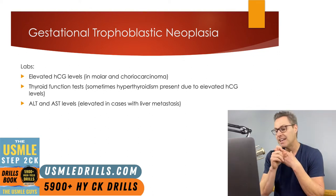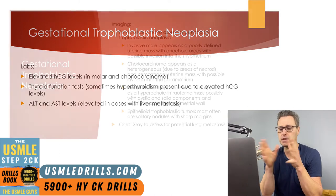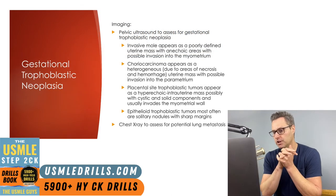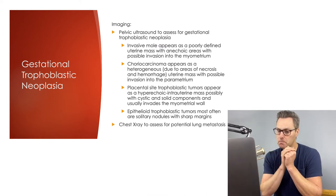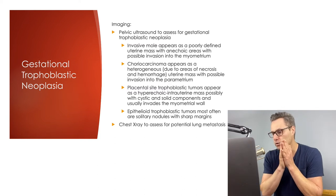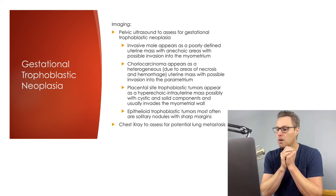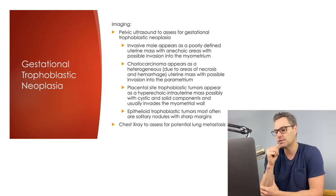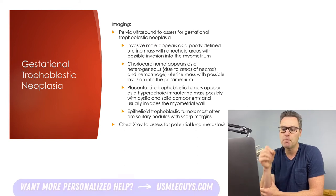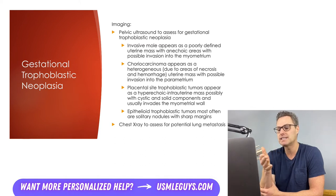ALT and AST levels can be elevated if the neoplasia has metastasized to the liver. The imaging modality of choice for gestational trophoblastic neoplasia is a pelvic ultrasound. GTN derived from an invasive mole appears as a poorly defined uterine mass with anechoic areas and possible invasion into the myometrium. Choriocarcinoma appears as a heterogeneous uterine mass because of necrosis and hemorrhage, with possible invasion into the parametrium. Placental site trophoblastic tumors appear as a hyperechoic intrauterine mass, possibly with cystic and solid components, usually invading the myometrial wall. Epithelioid trophoblastic tumors are most often solitary nodules with sharp margins. Patients should also have a chest x-ray to assess for lung metastasis.